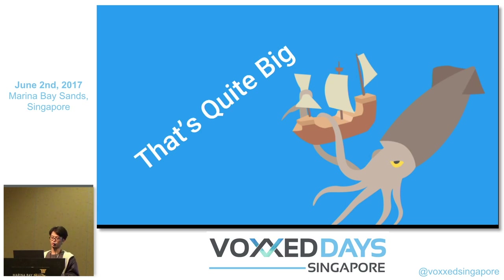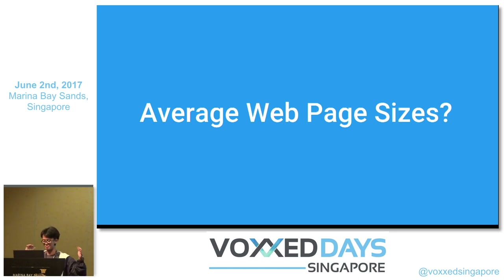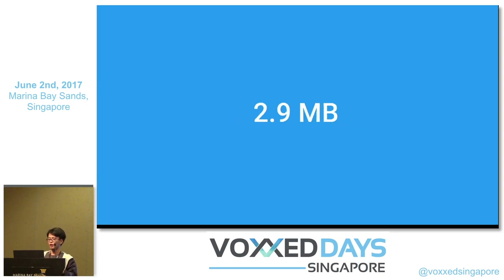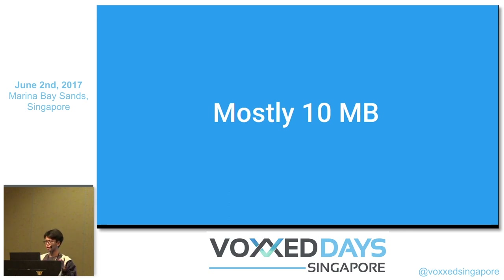We've got a problem. What do you think is the average web page size nowadays? The average web page size is 2.9 MB, which is close to 3 MB, and most of the sites I've visited are 10 MB. It's really important that I mention sizes, speed, and performance because it's related to PWA later on.